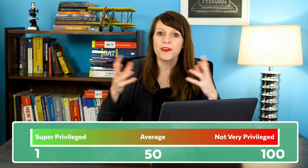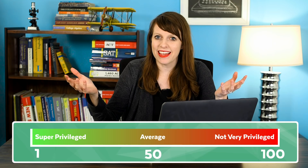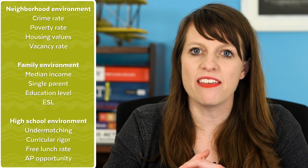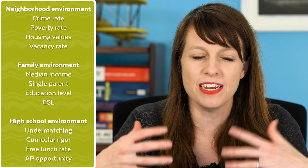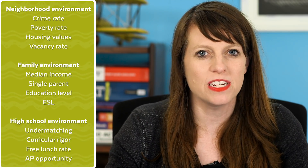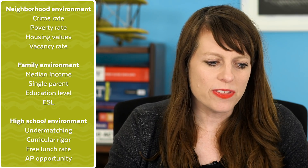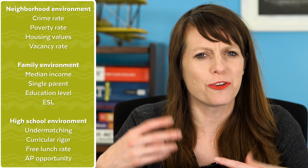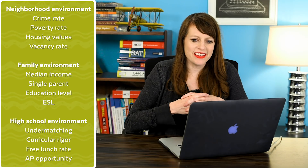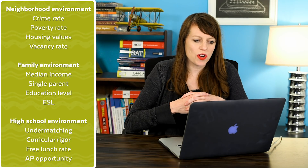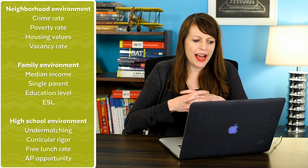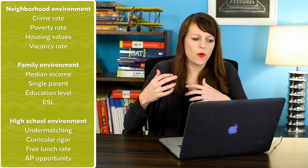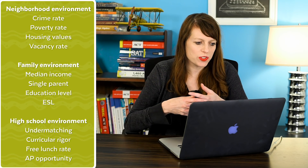So where did they come up with this index and how did they create it? They created it by looking at a number of factors. This is the list that the Wall Street Journal has published. Some articles say it was 15 different factors, but I really only counted 12 factors under three subsections. I'm not really sure how they measure all these things or what weight they give to this particular score.